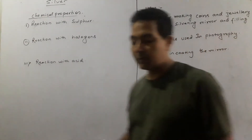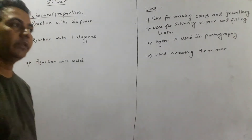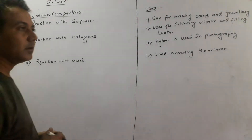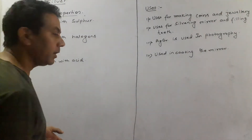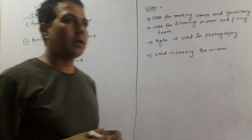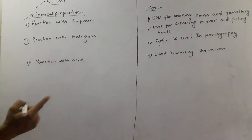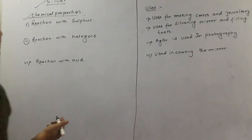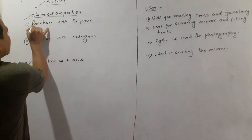Good morning to all of you. Today we are continuing with the same topic — silver. In our last class we studied about silver, its ores, and its physical properties. So we continue the same topic with the chemical properties of silver. We are going to study some of the chemical properties which may be asked in your exam.